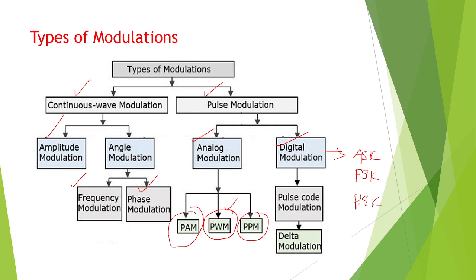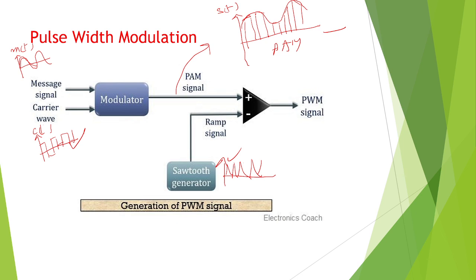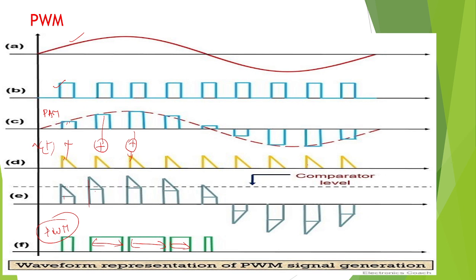This is about Pulse Width Modulations. The carrier pulse is varied according to the message signal. High amplitude means high width, low amplitude means low width. In this way, width changes and finally we get Pulse Width Modulated output. This is the Pulse Width Modulation.